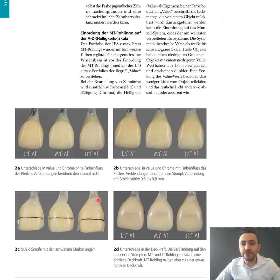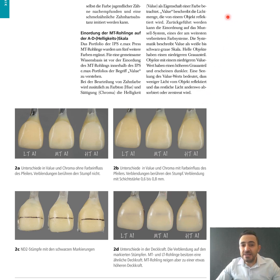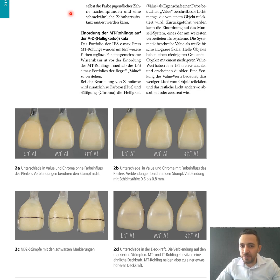Moving ahead to figure 2c, I wanted to check the masking property of each veneer. I drew a black marking on the stump, and in figure 2d I placed those veneers again on the stumps to look at the difference in the masking effect. MT and LT ingots provide a similar masking effect at this thickness of 0.6 to 0.8 mm. We can still see the marking, but the question is which ingot filters it better. In my opinion, the MT ingot tends to have a slightly increased masking effect.